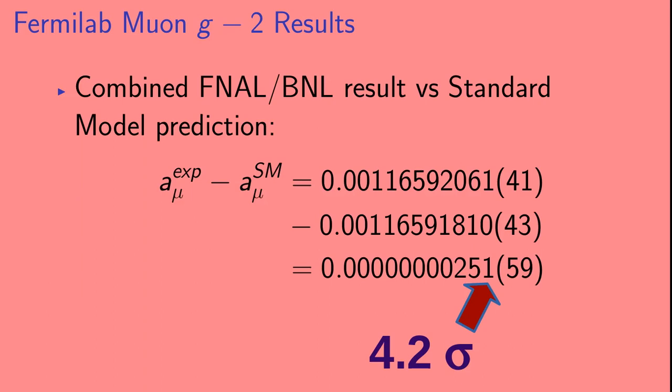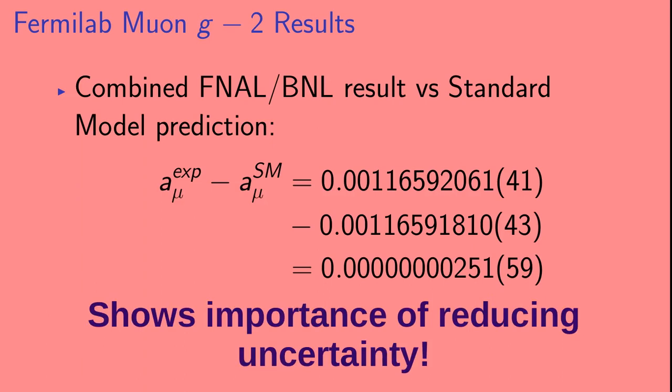And just as a reminder, the difference between the Brookhaven result and the standard model prediction was 3.7 sigma. So this shows how important it can be to reduce uncertainties.